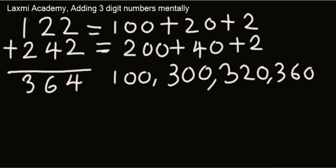So how you would do it is 100, 300, 320, 360, 362, 364. And sometimes at the back of your head you know that 2 and 2 is 4, so you can from 360 directly jump to 364. Let's try a couple of examples and you can pause the video and copy down the problem and practice with me.